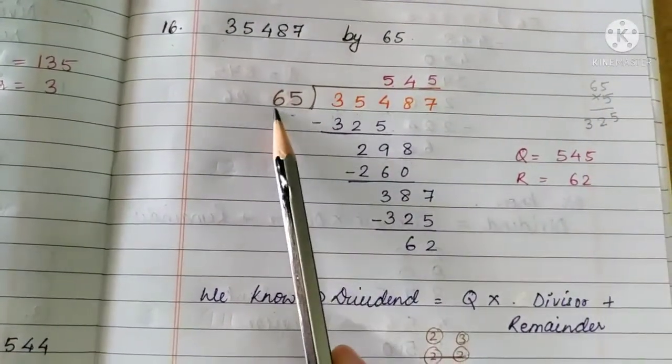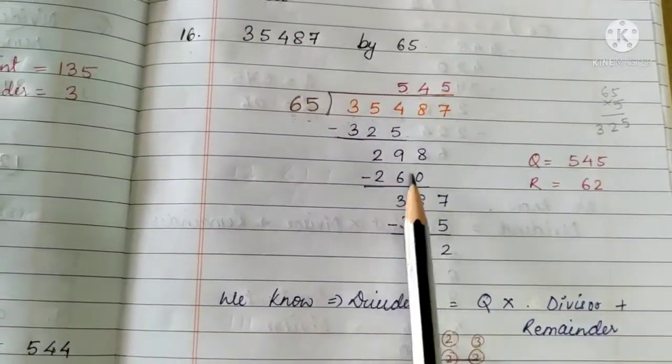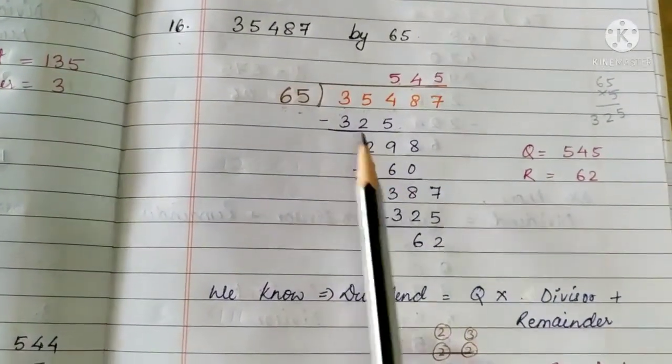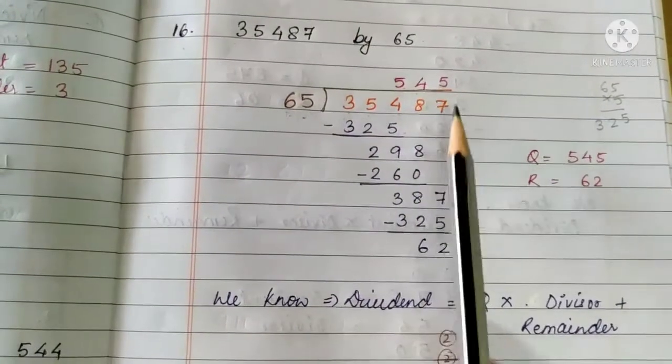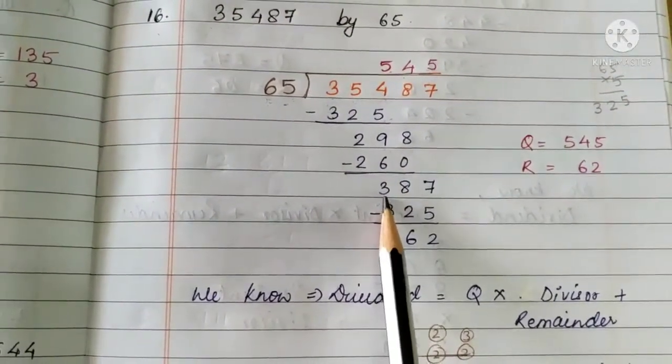Again, you can use the same trick here. So, 6 fours are 24, isn't it? So, the number obtained will be somewhere near this. So, 65 fours are how much? 260. Again, by subtracting we get 38.